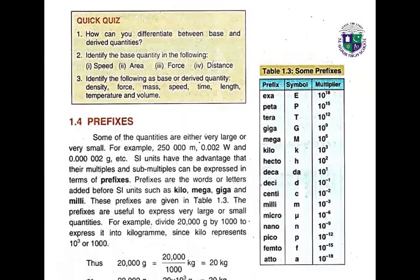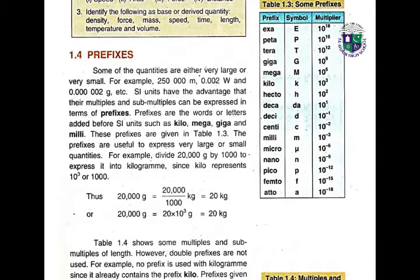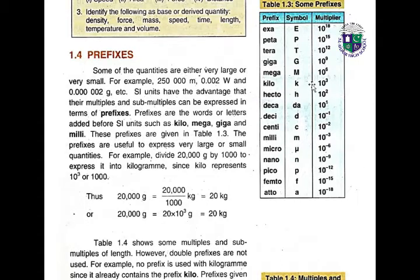Some quantities are either very large or very small — for example, 250,000 meters, 0.002 watts, and 0.00002 grams. SI units have the advantage that their multiples and submultiples can be expressed using prefixes. For example: Exa has multiplier 10^18, Peta 10^15, Tera 10^12, Giga 10^9, and so on. Prefixes are words or letters added before SI units, such as kilo, mega, giga, and milli. These prefixes are useful to express very large or very small quantities.